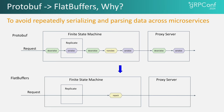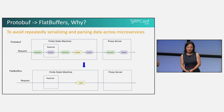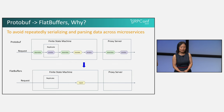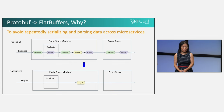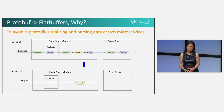The bottom diagram shows the new approach using flat buffers. With flat buffers, the need for repeated serialization and deserialization is eliminated. When a request arrives, there's no need to deserialize it — data is directly accessed from the raw buffers. When it needs to be sent to the next microservice, it undergoes a simple repack operation, which is far less resource-intensive compared to full serialization. And when the data reaches the new microservice, it can be used and repacked as necessary without the overhead of deserialization and serialization.